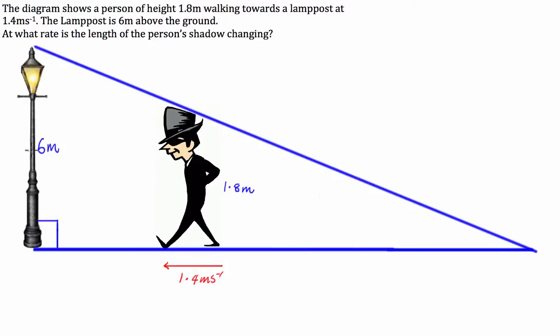Now the lamppost is six meters above the ground. At what rate is the length of the person's shadow changing?